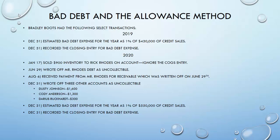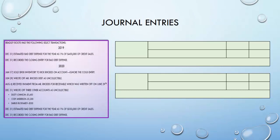On August 6th they're going to receive payment for the receivable they just wrote off on June 29th — this happens sometimes; you think a customer won't pay and all of a sudden you get paid. On December 31st they write off three other accounts as uncollectible: $1,600 from Dusty Johnson, $1,300 from Cody Anderson, and $300 from Darius Ruckert. On December 31st they once again estimate bad debt expense at 1% of $550,000 of credit sales, and then record the closing entry for bad debt expense.